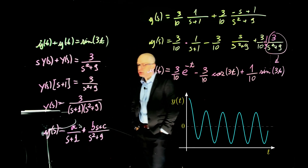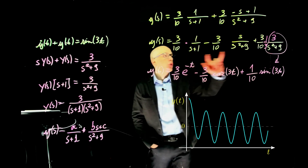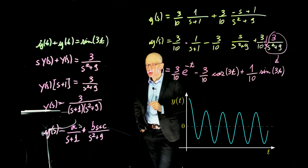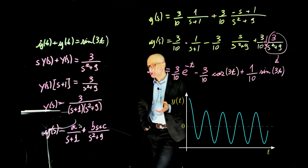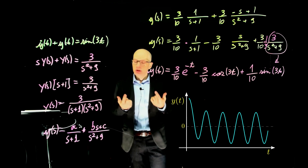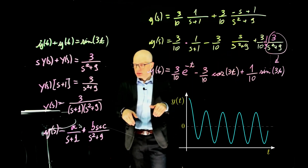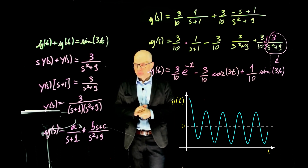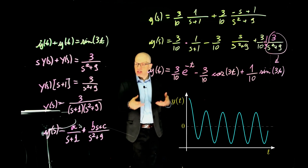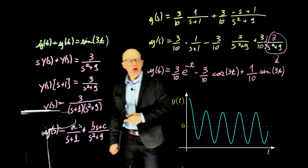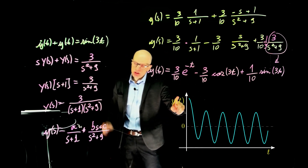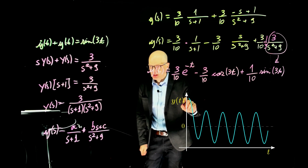The last part of the question asks us to relate the poles of Y(s) with the time response. By poles I mean the values of s in the denominator that make it go to zero. We're interested in these because the Laplace transform will spike to infinity at those values of s. And depending on where they're located on the sigma-omega plane, they give us exponential, sinusoidal components, or combinations.